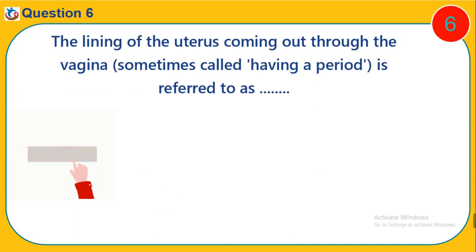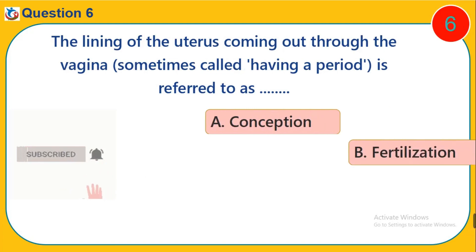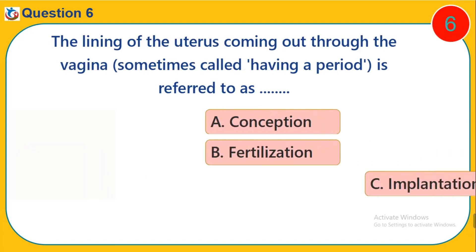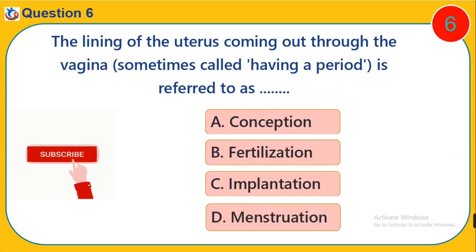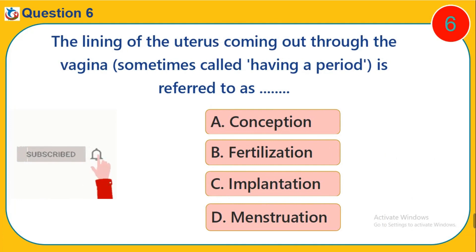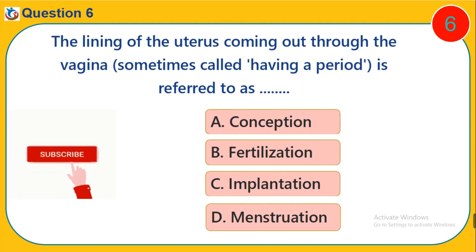Question 6. The lining of the uterus coming out through the vagina, sometimes called having a period, is referred to as dash. A. Conception. B. Fertilization. C. Implantation. D. Menstruation.